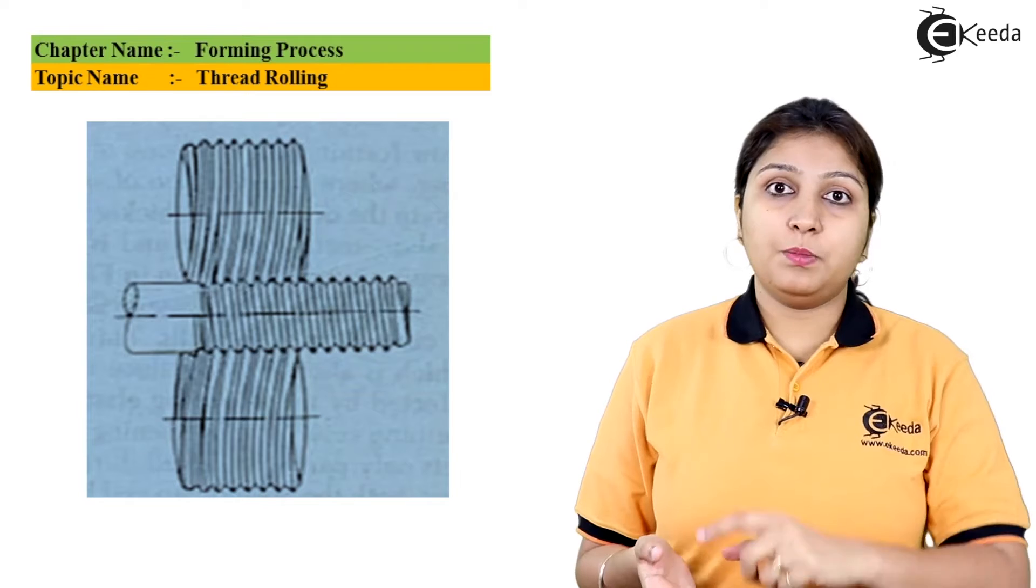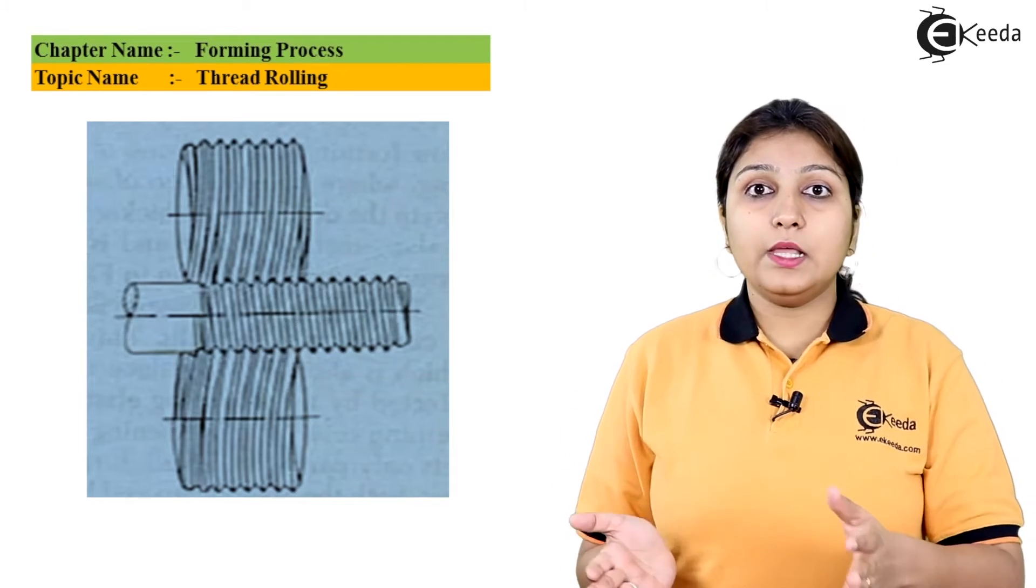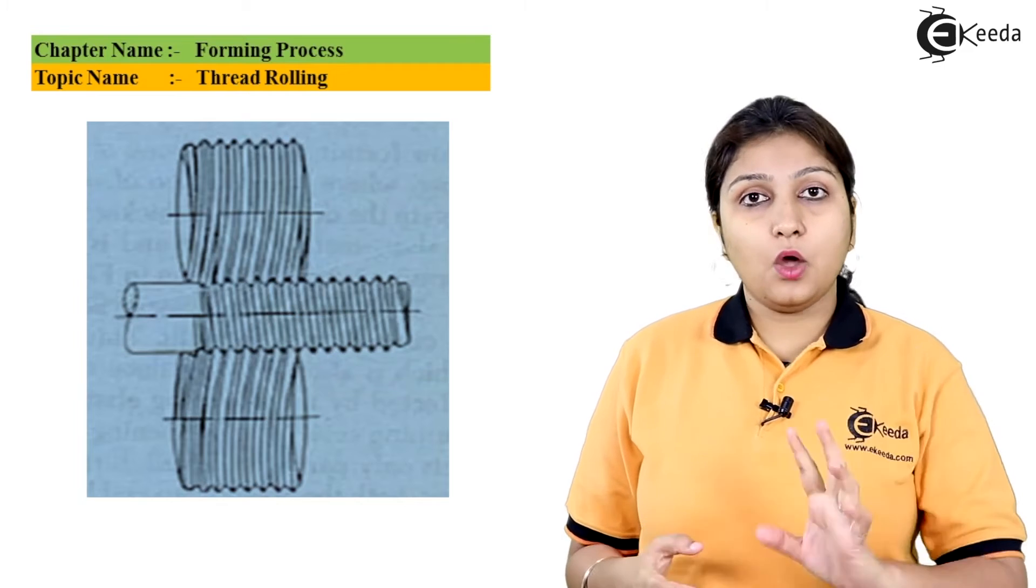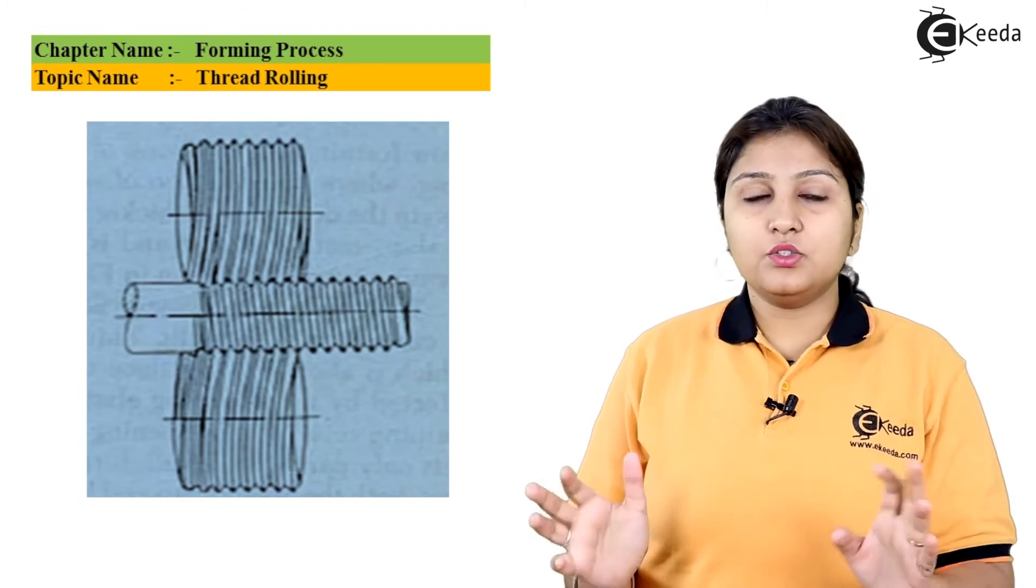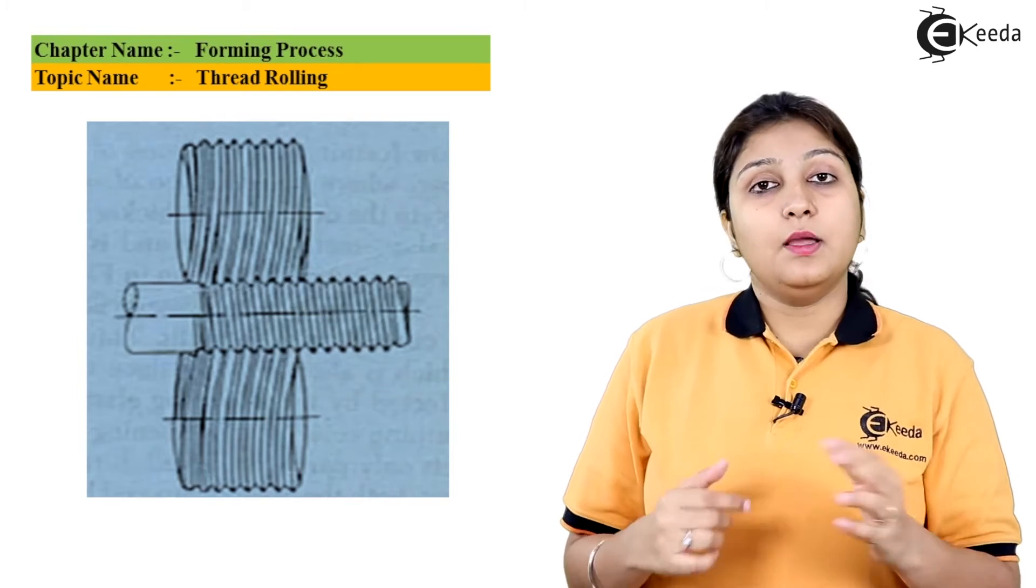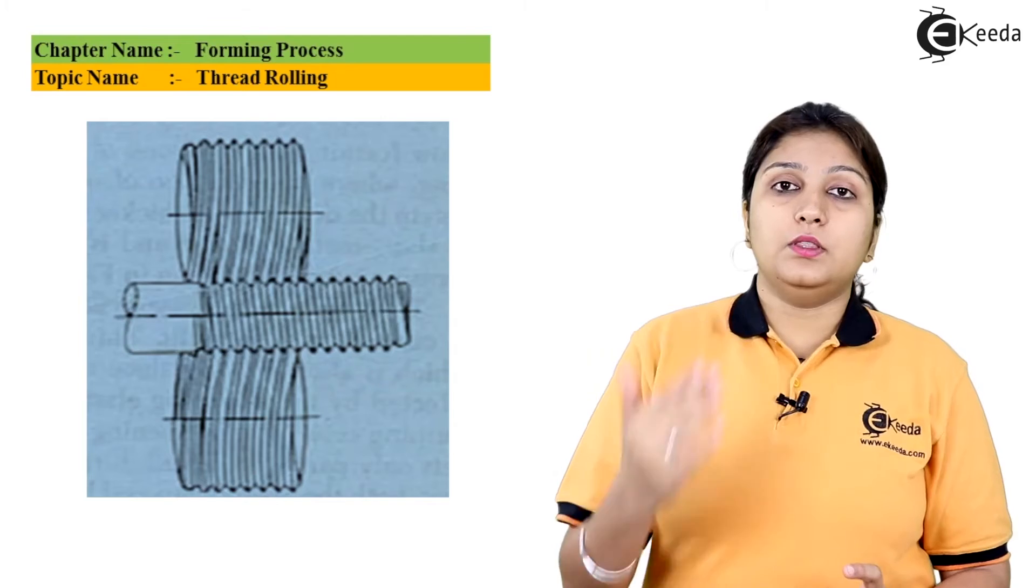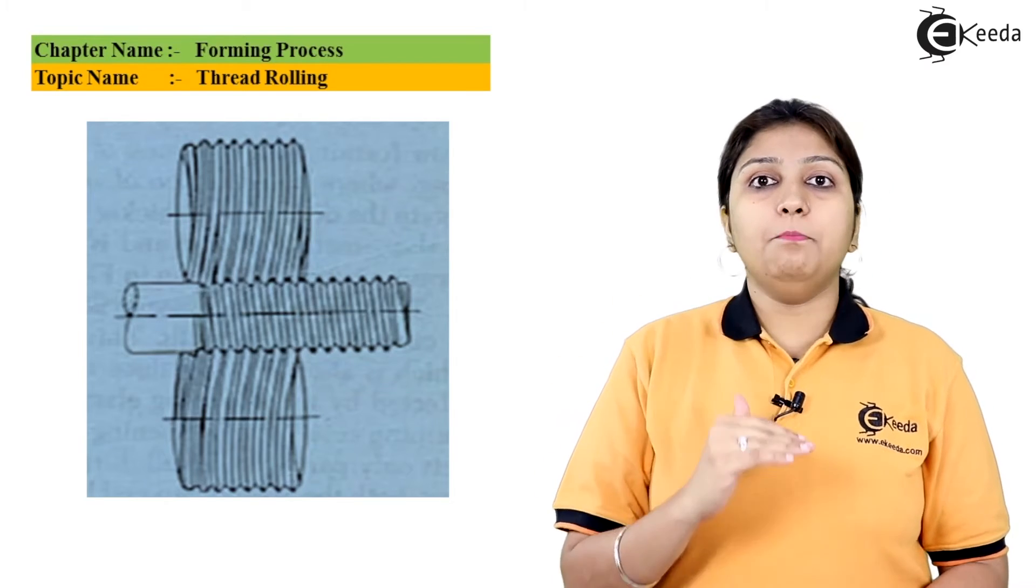The material is passed between the two dies and it is compressed. Translatory motion is there along with the pressing. Pressure is not so high that the metal gets squeezed. But with the translatory motion, the threadings of the die come onto your material.